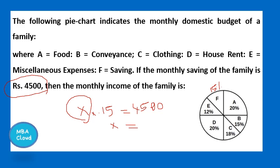Our answer is: 4050 divided by 0.15, multiplied by 100, gives 30,000. So 30,000 is the monthly income. F represents 15% which corresponds to savings. Looking at the figure for F, F is the savings category representing monthly income of 30,000.